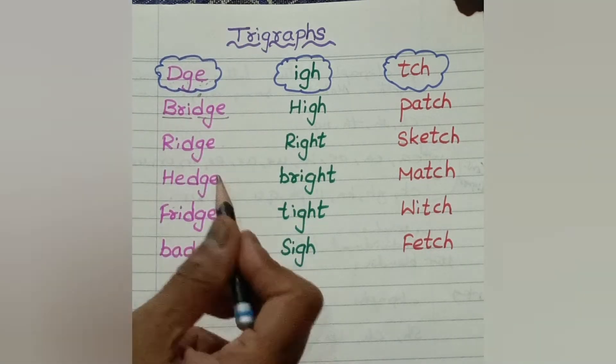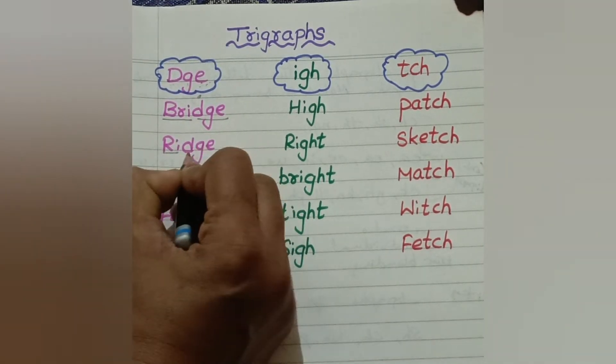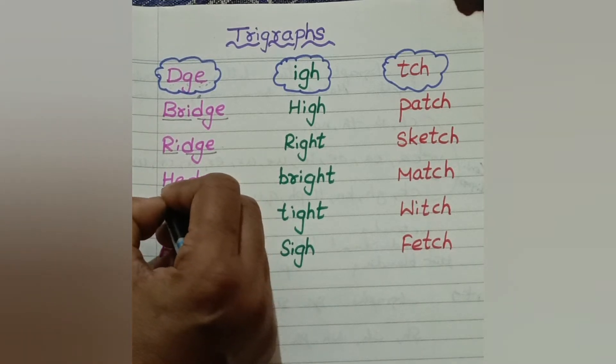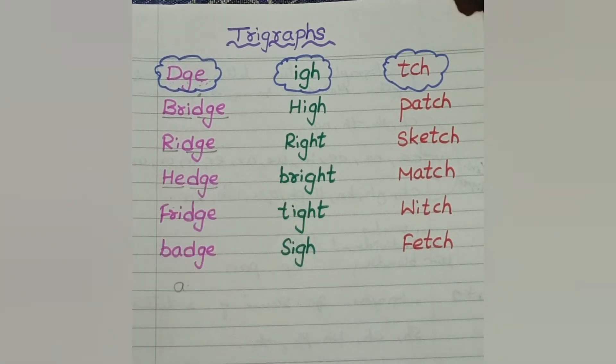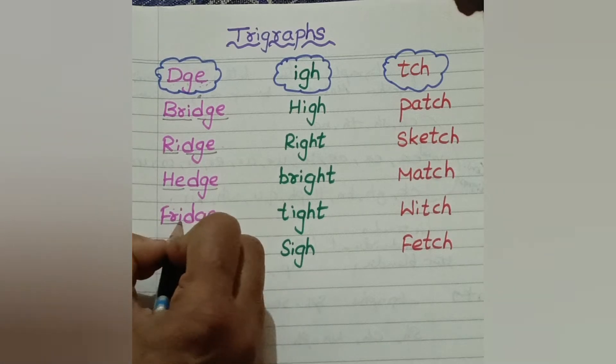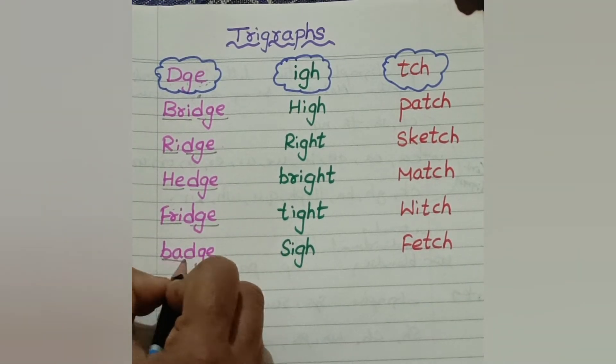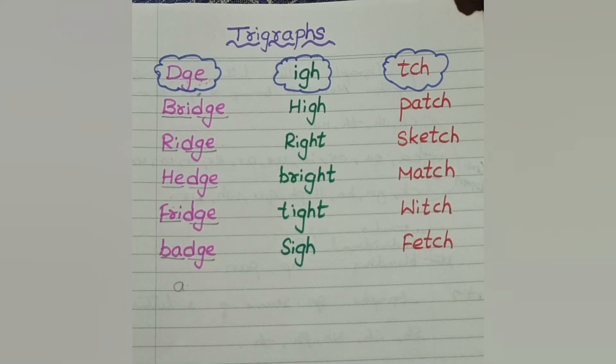So let us read the words: Ridge. Hedge. Fridge. Badge.